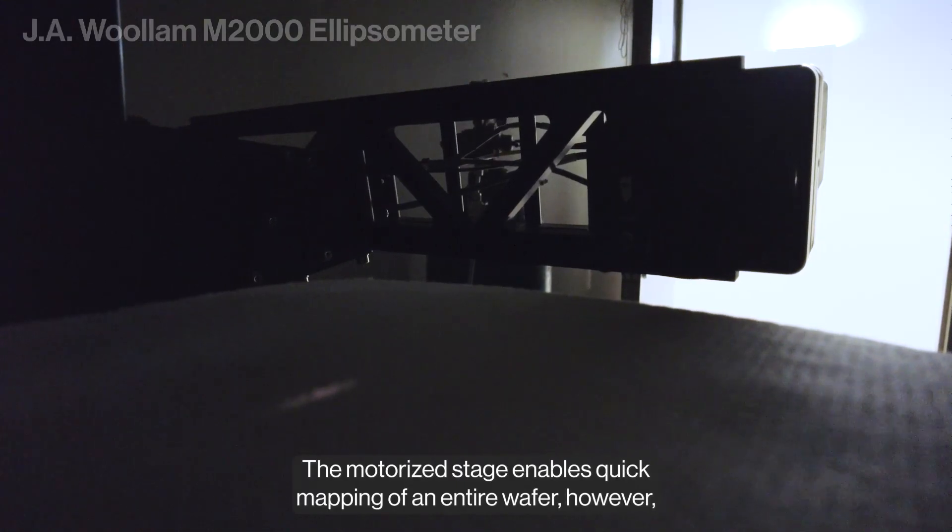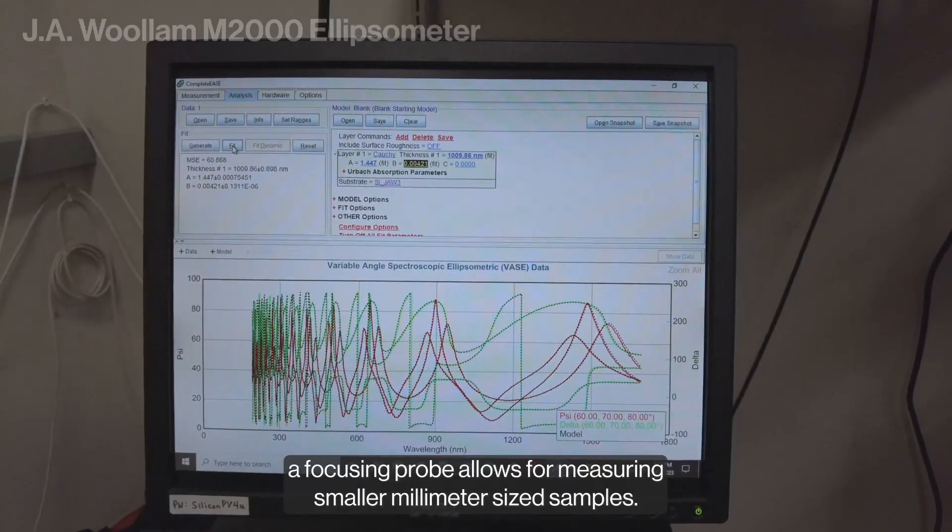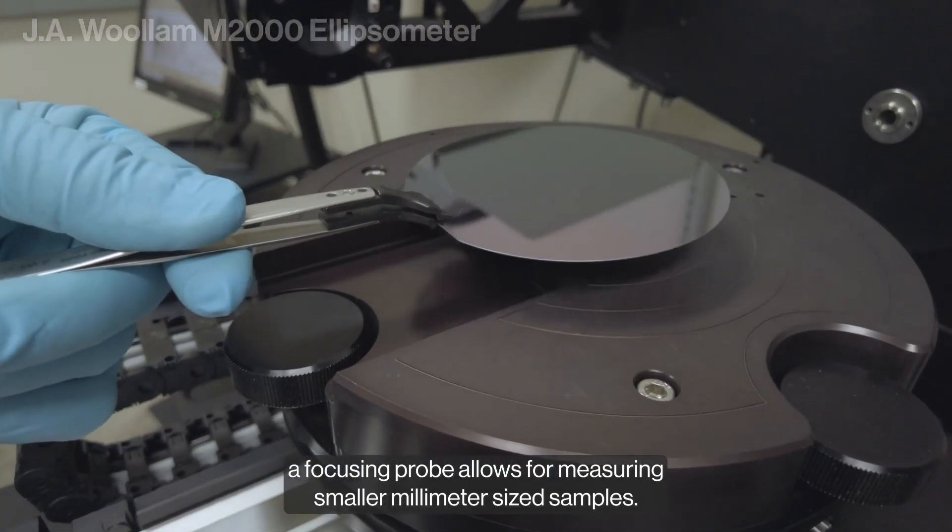The motorized stage enables quick mapping of an entire wafer, however, a focusing probe allows for measuring smaller, millimeter-sized samples.